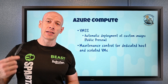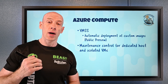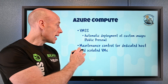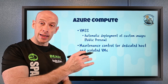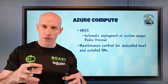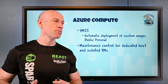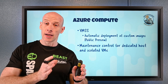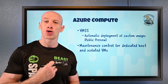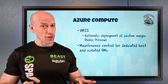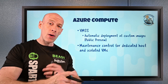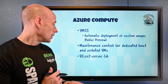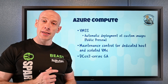Maintenance control for dedicated hosts and isolated VMs — remember an isolated VM takes up the whole host with no one else on it. Now for both isolated VMs and dedicated hosts, you have a 35-day rolling window to batch up any updates and control when maintenance happens. If you haven't done anything in 35 days it will force the patch, but within that window you control the timing.